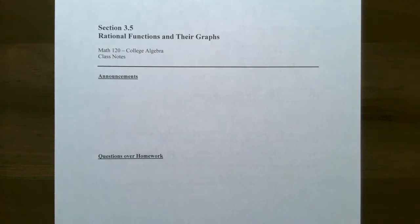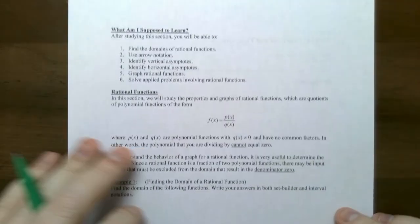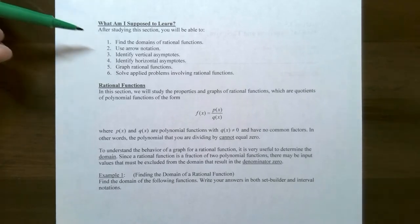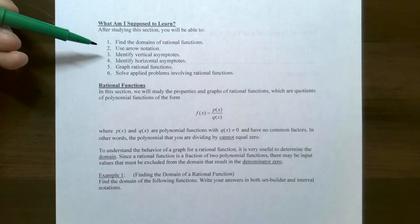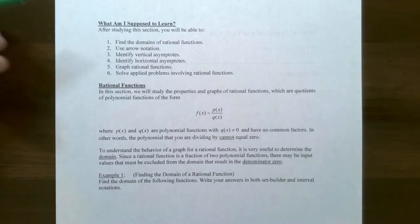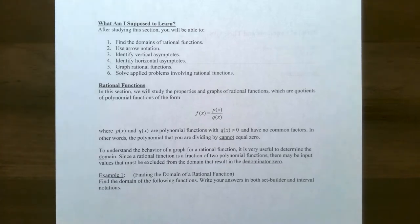Hey everyone, it's Professor Pemberton. In this video we're going to look at rational functions and their graphs. In this first video we're going to look at how to find the domain of a rational function, how to use arrow notation, and how to find vertical and horizontal asymptotes. In the next video we'll look at how to graph rational functions and then solve applied problems that involve rational functions.